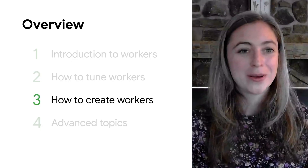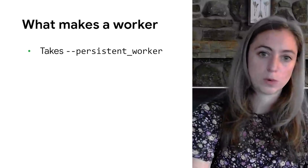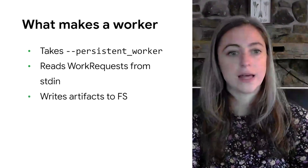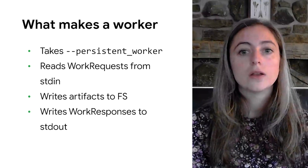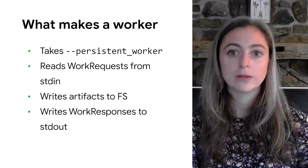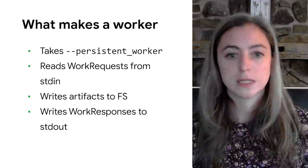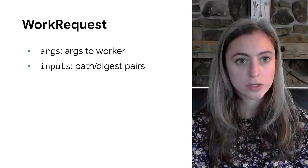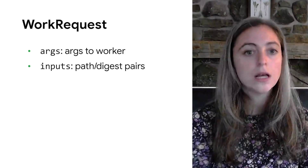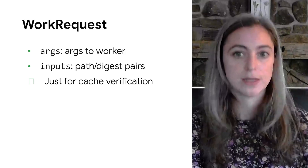So how do you create a worker? What a worker is is actually very simple — it's a binary. It accepts the persistent worker flag, reads work requests from standard in, does some stuff writing any artifacts directly to the file system, and then writes a work response to standard out. Notably, it shouldn't do anything other than that on standard in and standard out — it only reads work requests and writes work responses. It can write errors to standard error, but it shouldn't write them to standard out. A work request is a structure that has some arguments to the worker as a list. It also has a list of path-digest pairs, which represent the input files that the worker is allowed to access. They're not actually restrictive — they're usually just used for cache verification — and the worker has access to the files that it needs to use.